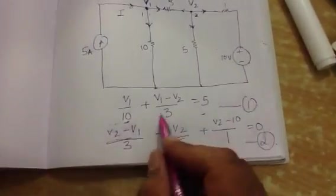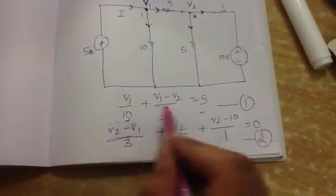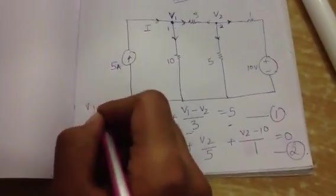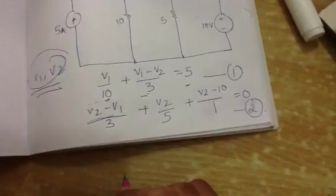Now, on simplifying these two equations, we can get the values of V1 and V2. Shall we do it?